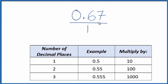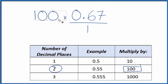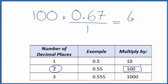What we need to do is get this number here to be a whole number. I see I have two decimal places. If I have two decimal places, I'm going to multiply by 100, and that'll give me a whole number. So 100 times 0.67 gives me 67. There's our whole number.